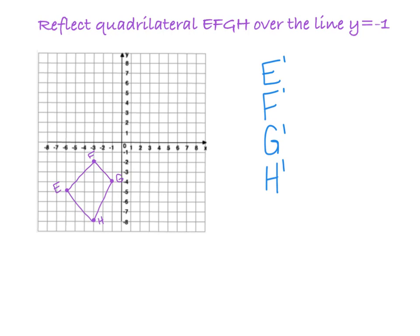For our final example, we'll reflect quadrilateral EFGH over the line y equals negative 1. So first up, I'm going to draw a line where y equals negative 1 is. And I know that that is going to be a horizontal line that goes through the point negative 1. And now that's my line of reflection. So everything that I draw from every point from my original quadrilateral has to be an equal distance from that line on the opposite side.